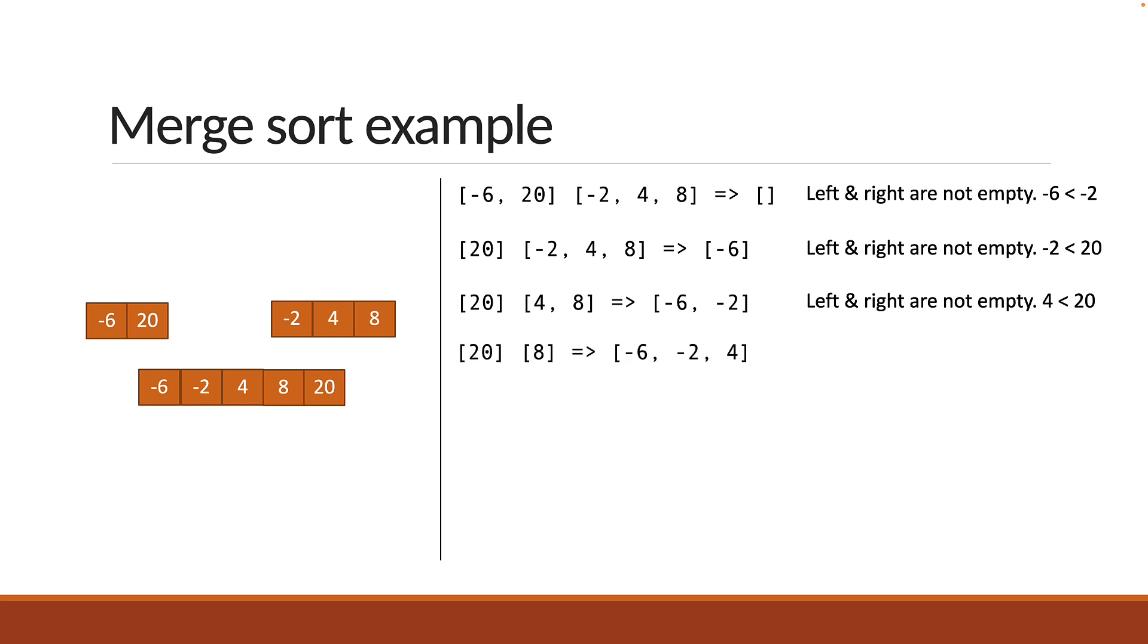We still have an element each. So let's compare one last time. 8 is less than 20. So push 8 onto the temp array. Now the right array is empty. So push the left array element onto the temp array. Both arrays are empty and we have just one sub-array left which is the sorted array.